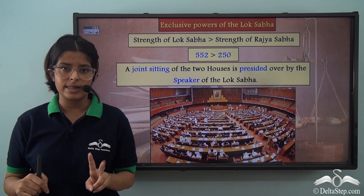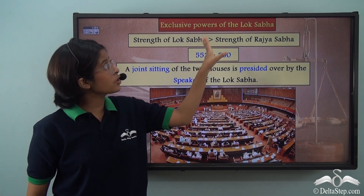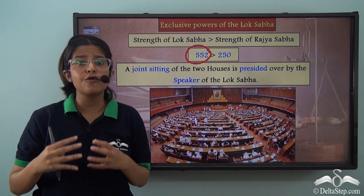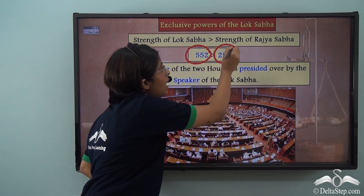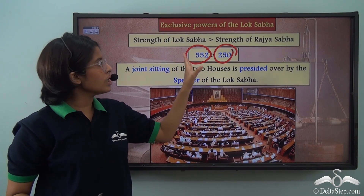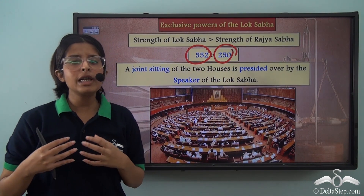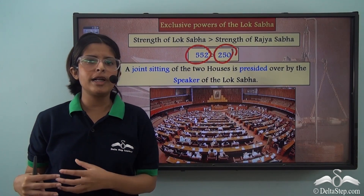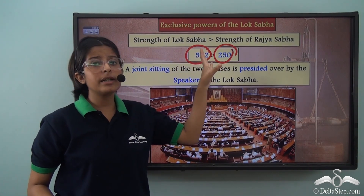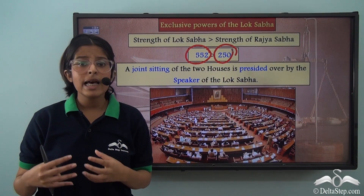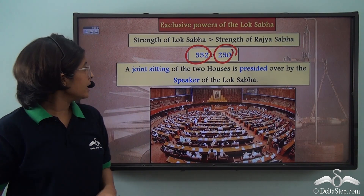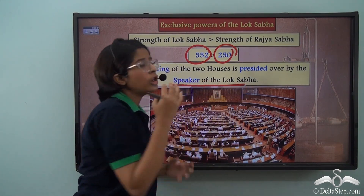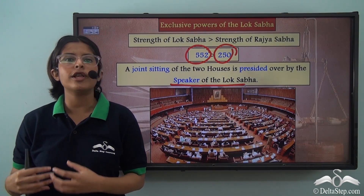This advantage is because of two things. Firstly, the strength of the Lok Sabha is greater than that of the Rajya Sabha — in general, 552 versus 250 members, or in the current status quo, 545 versus 245 members. So the Lok Sabha has a greater power in the joint sitting. Secondly, a joint sitting of the two houses is presided over by the Speaker of the Lok Sabha, giving the Lok Sabha a further advantage.